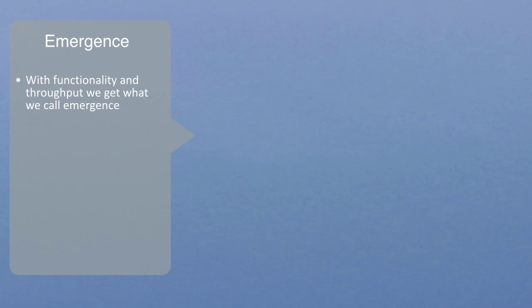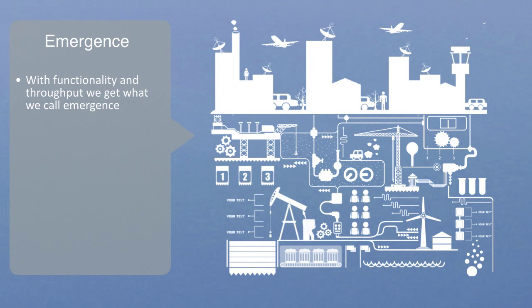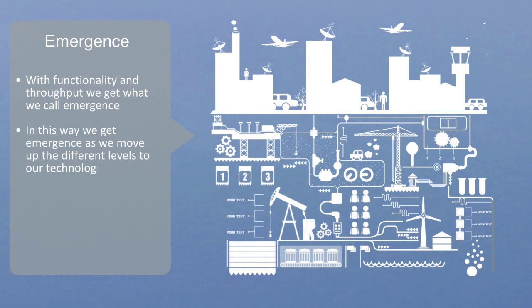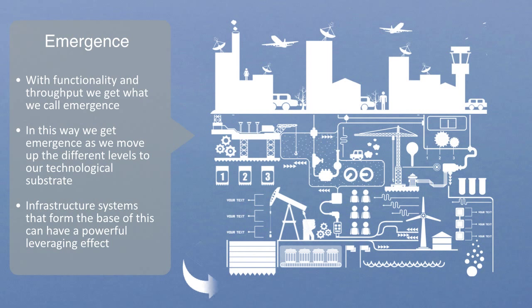With functionality and throughput, we get what is called emergence. When we're supported by a system of technologies that are working effectively, they enable us to function at a new level of organization. Technology offers the possibility for us to be more productive and live a better quality of life. Infrastructure systems are good examples of this. Unlike consumer goods, the throughput of infrastructure systems like transportation and electrical power networks enables other technologies to function more efficiently. In this way, we get emergence as we move up the different levels of our technological substrate. The infrastructure systems that form the base of this can have a powerful leveraging effect, where when you invest $1 in infrastructure, you can get $3 worth of overall economic value back.